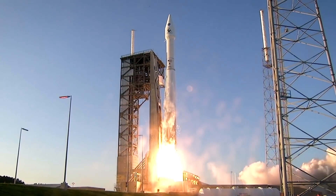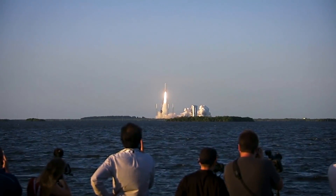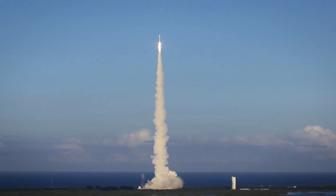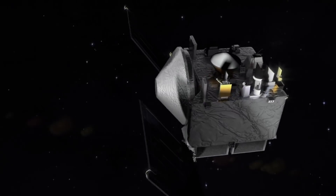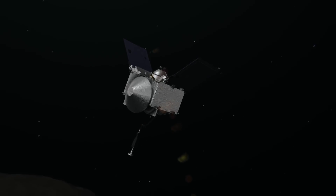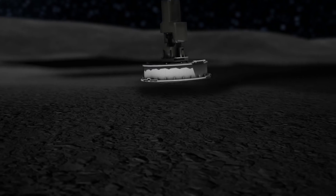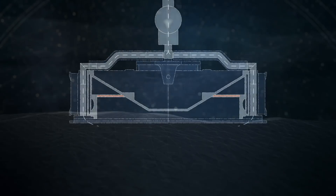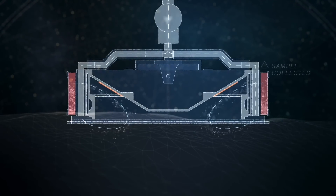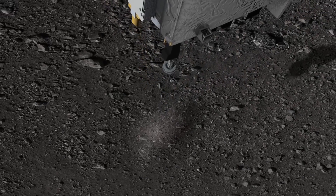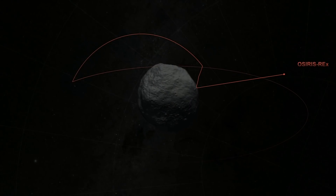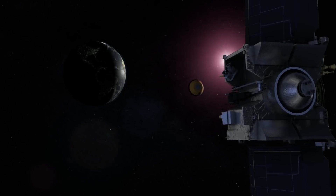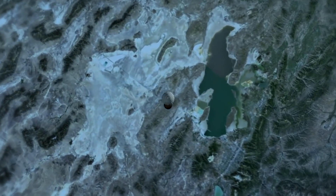Meteorites are samples sent to us by processes in the solar system over which we have no control. Sample return, we control. Sample return missions are really difficult — they require a spacecraft to rendezvous with a target, collect material from the surface, and bring it back to Earth. With the OSIRIS-REx mission on its seven-year mission to the asteroid Bennu and back, one of the things we're going for is material that hasn't been through the brutal process of entering the Earth's atmosphere at high speed. When we return samples from a comet, from the solar wind, or from the darkest asteroids — which have the most carbon near the surface and will tell us about origin-of-life chemistry — those are the important targets for research.